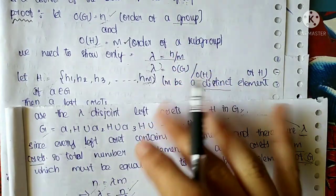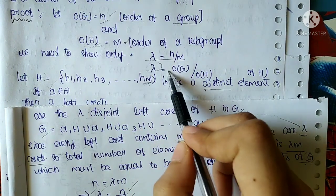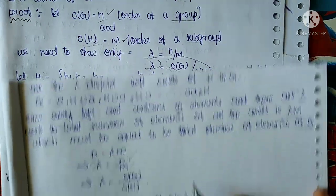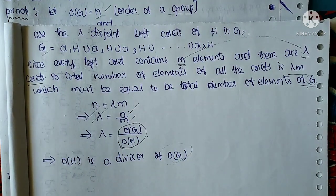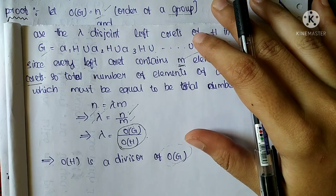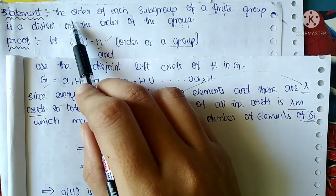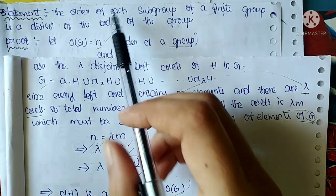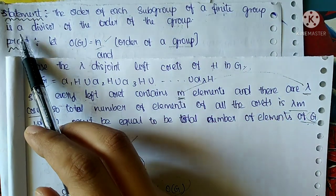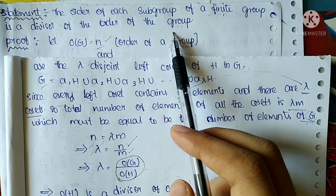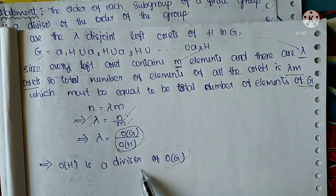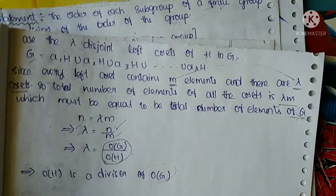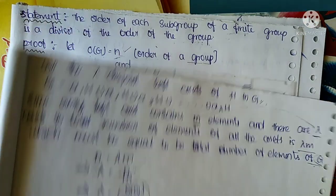Lambda equals n by m — where n is order of G and m is order of H — so lambda equals order of G divided by order of H, i.e., og by oh. Therefore oh is a divisor of og. This is what we needed to prove. Hence, the statement of Lagrange's theorem — the order of each subgroup of a finite group is a divisor of the order of the group — is proved.